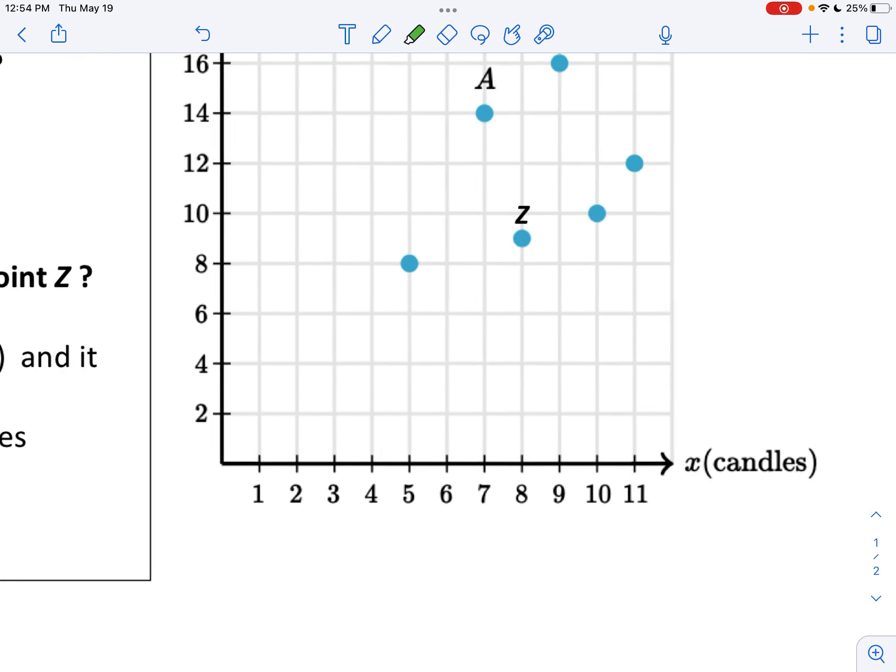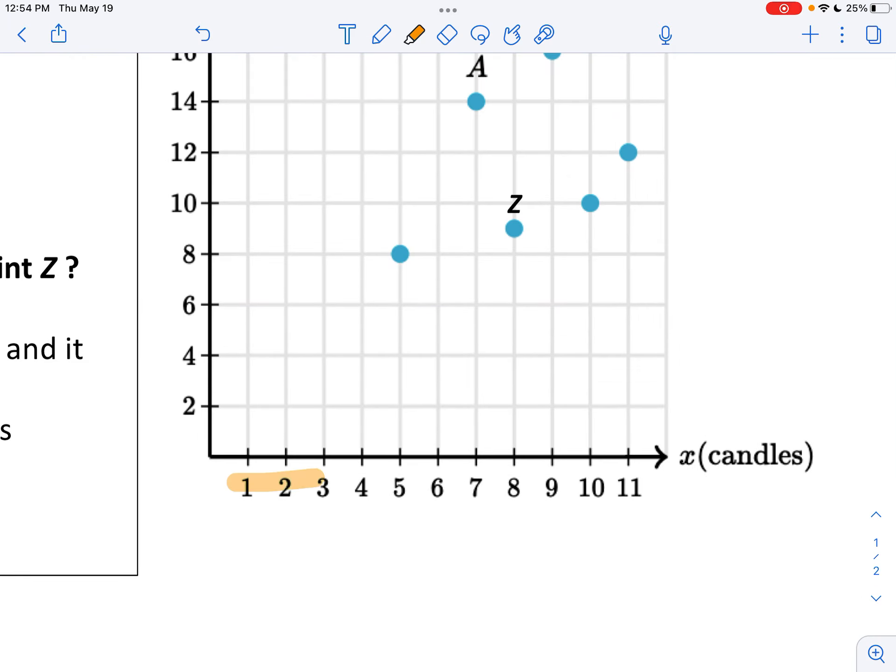So if I look down on the bottom of my graph I can see a bunch of numbers: 1, 2, 3, 4, 5, 6, 7, 8, 10, 11. That's the candles.